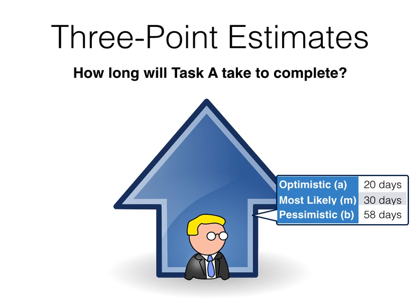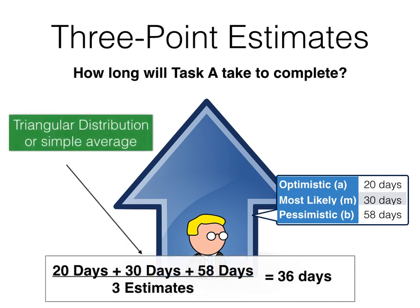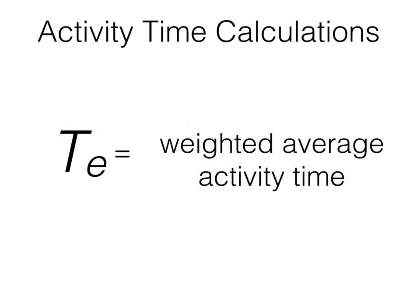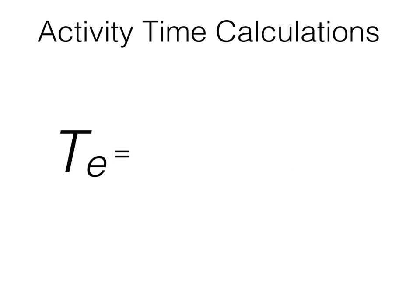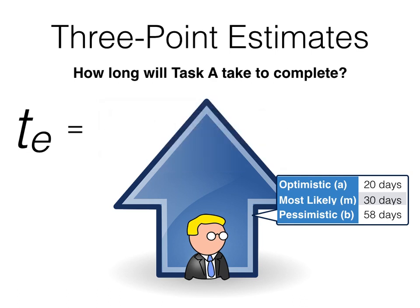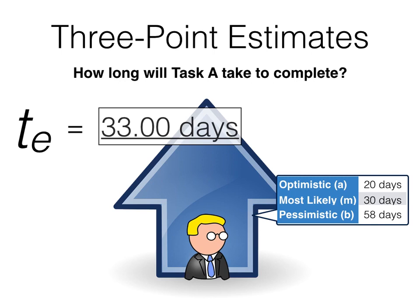We could take these three values and do a simple average or a triangular distribution. The problem with computing a simple average is that we are not weighting heavily enough the opinion of our estimator on what is the most likely time period in which this task will be completed. So in project management, we often use something called TE, or the weighted average activity time. In this case, we are weighting more heavily that average activity time, represented by M, in our calculations. We find that TE is, in fact, at 33 days. That is how we do three-point estimates in project management — we are going to do this calculation for TE, not a simple average.